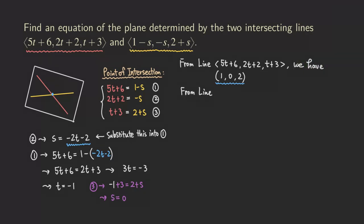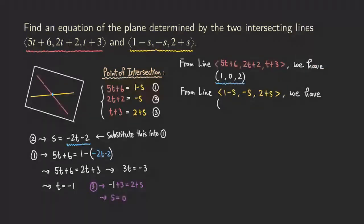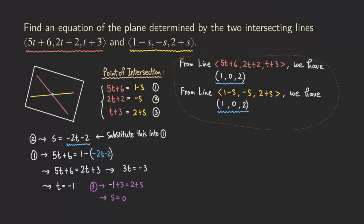Let's check quickly using the other line. The other line is 1 − s, −s, 2 + s. Plugging s = 0, we get: 1 − 0 = 1, −0 = 0, and 2 + 0 = 2. So we get the same point (1, 0, 2), which confirms that both lines do intersect at that point. This checking part is actually optional.